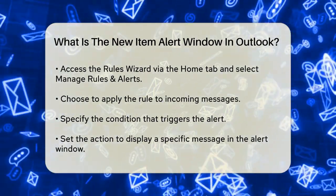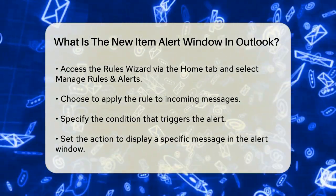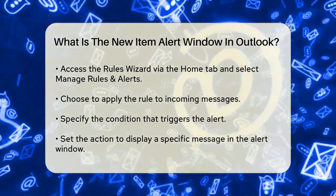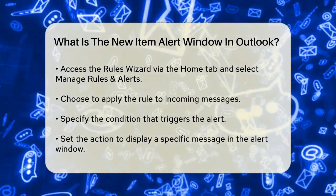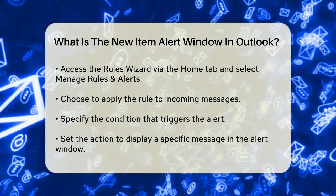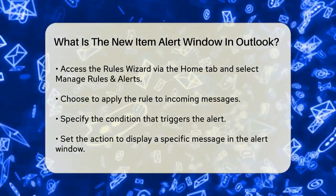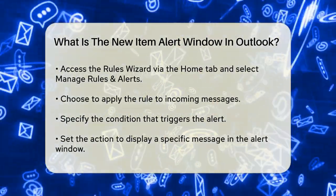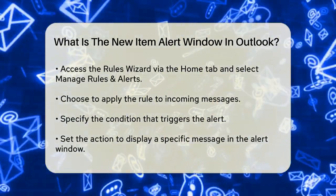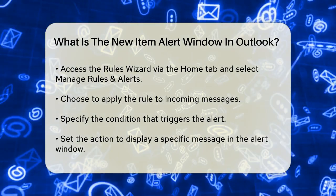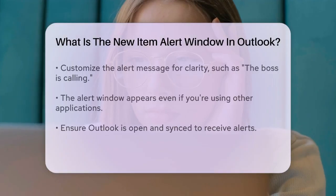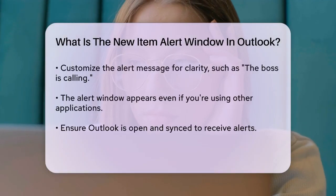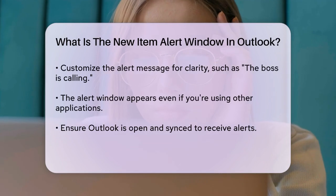Here, you can enter a custom message, like 'The boss is calling,' to make it clear why the alert is popping up. When an email that matches your criteria arrives, Outlook will display this alert window on your screen, even if you're working in another application, as long as Outlook is open.